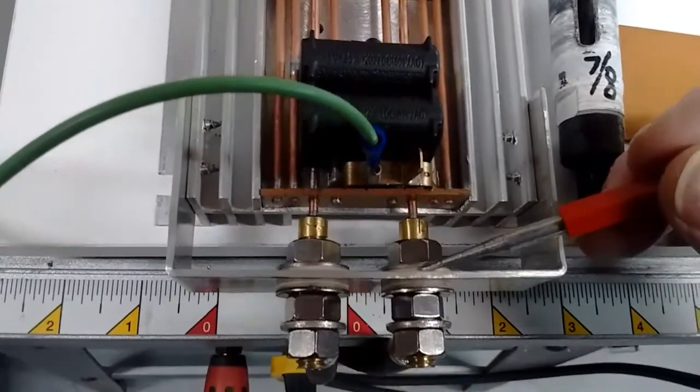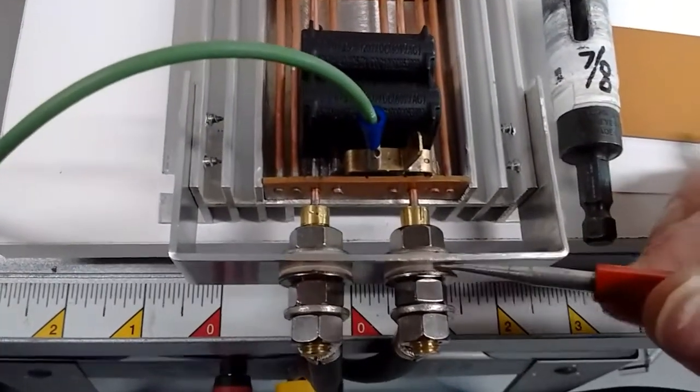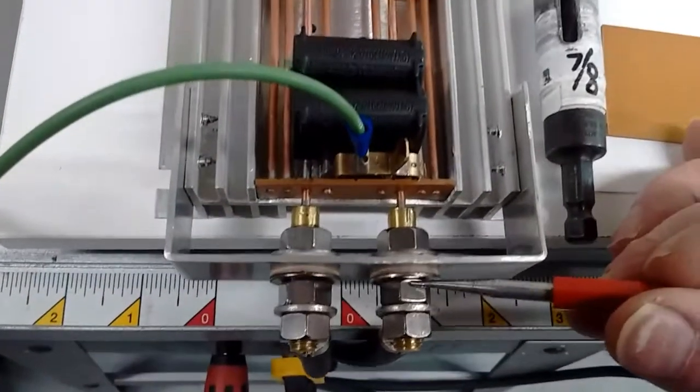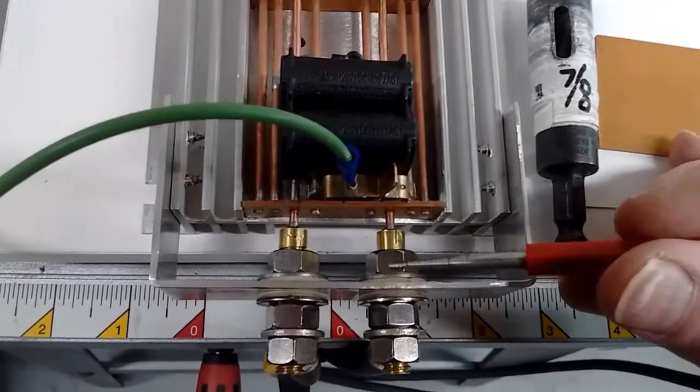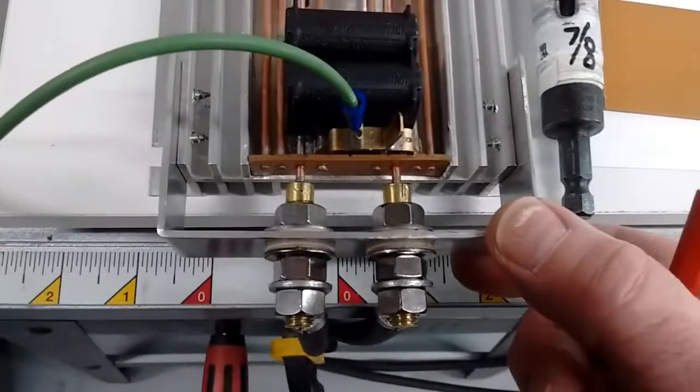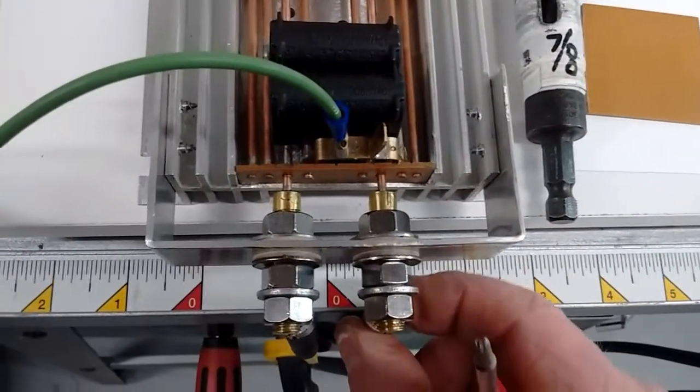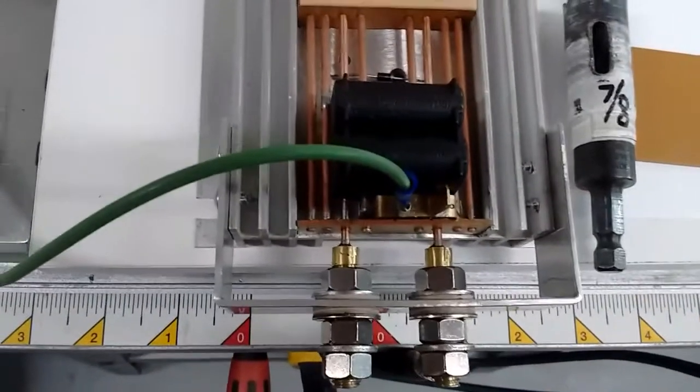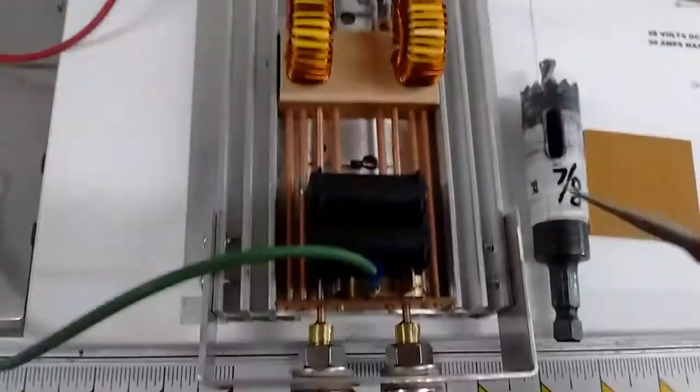All these nuts and washers are all non-magnetic stainless steel. That gives you a support bracket where these aren't going to be ripping off, because this whole unit here is going to mount to the top of this power supply.